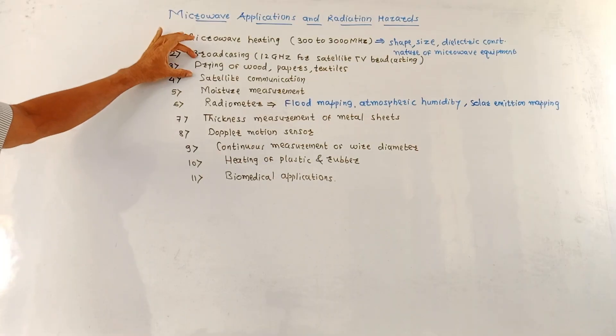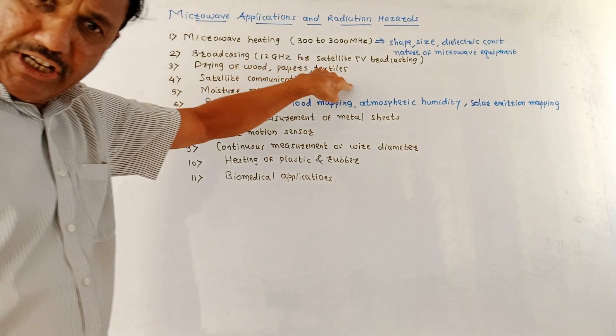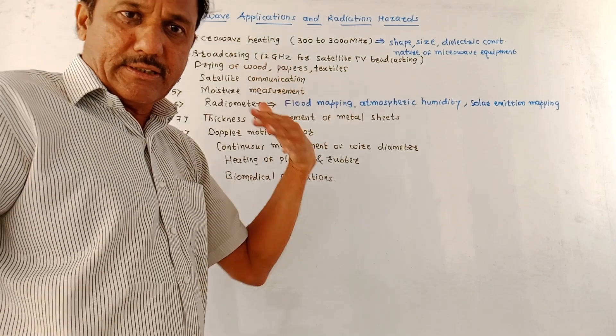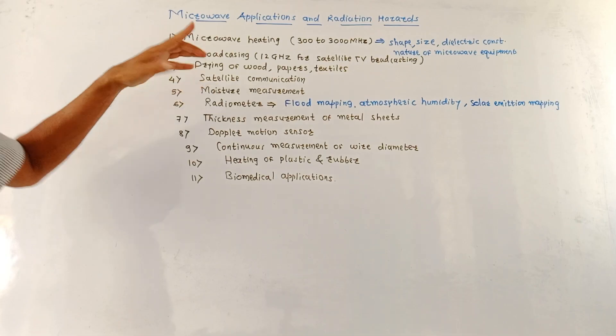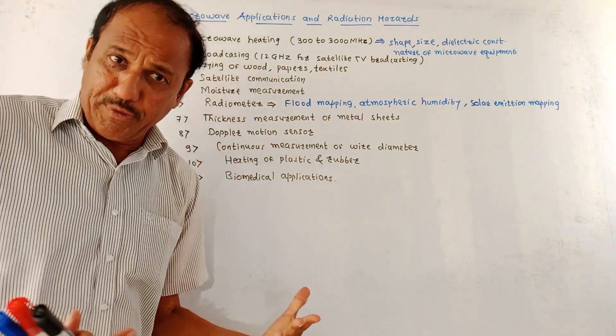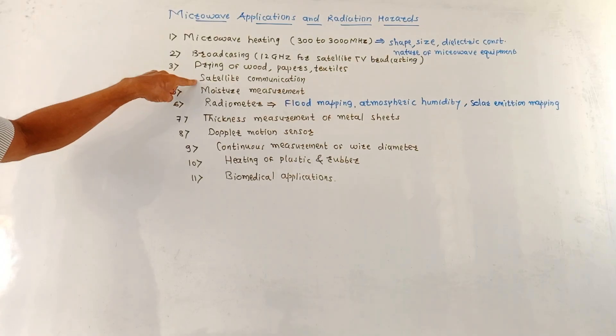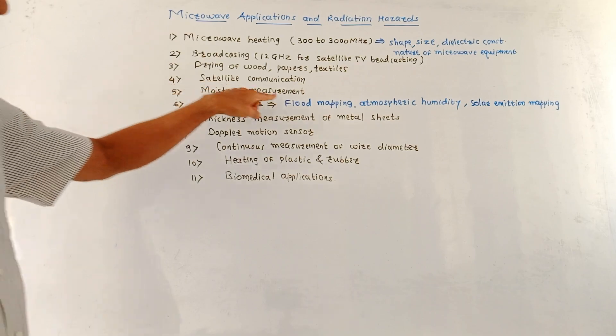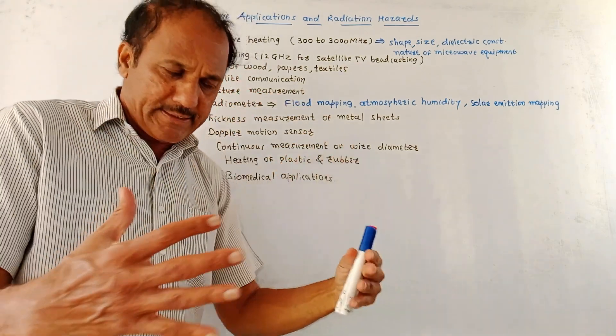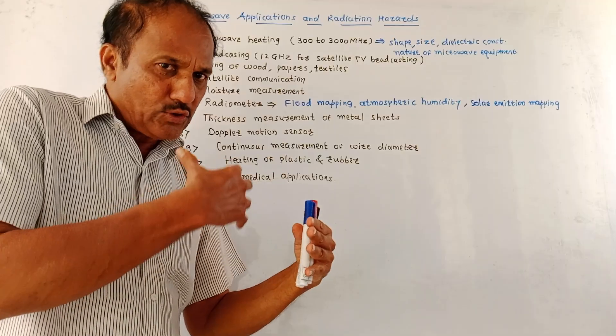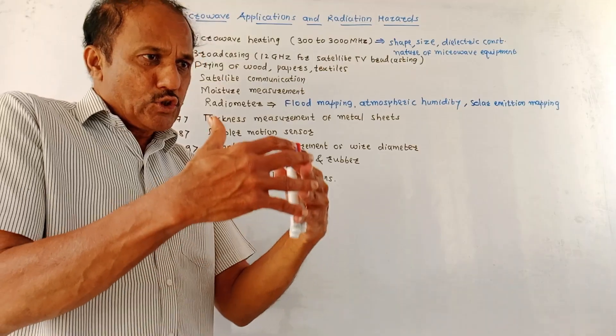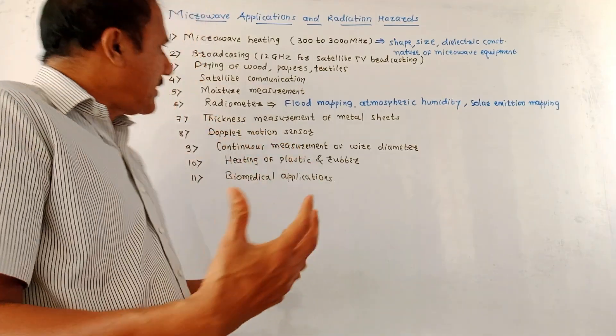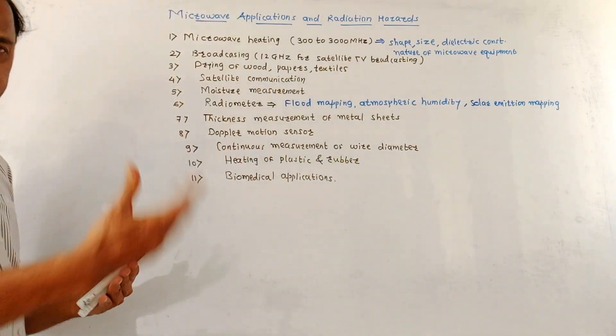Third application is for drying of wood, paper, sand, textiles, and certain printing inks. In case of satellite communication, microwave is used because it can penetrate through the ionosphere. It can also be used for measurement of moisture content. The reason is when microwaves are passing through water, the water absorbs the microwave energy, so you can measure the moisture contents using microwave signals.